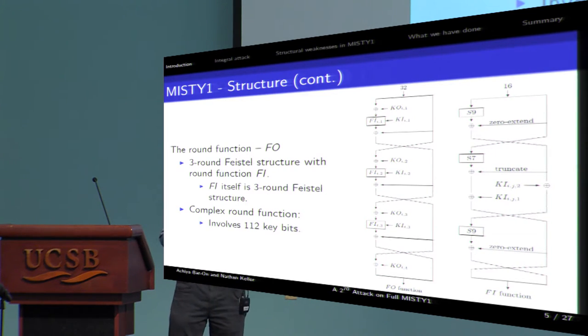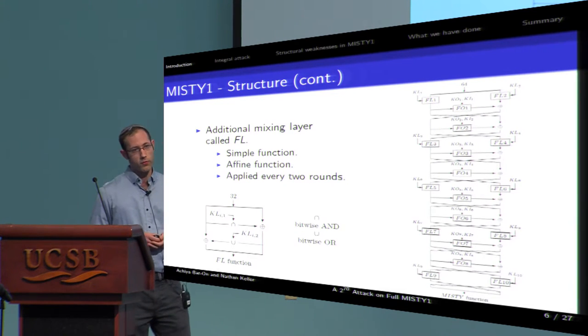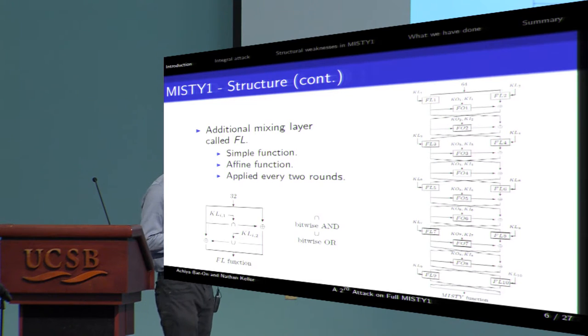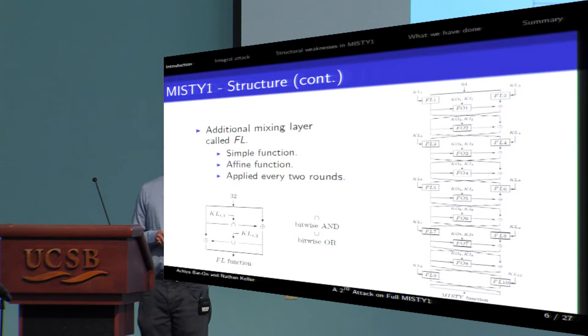Shortly, the round function of MISTY-1 is a complex function. And if it is not sufficient, the designer added one more function called FL, to make the structure even more complex. The FL function is a fairly simple function that applied every two rounds, and it is used as a whitening layer.